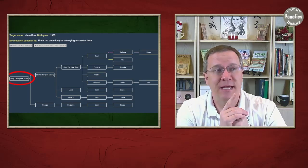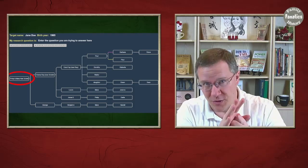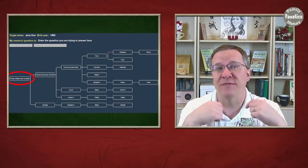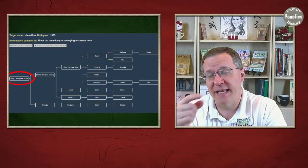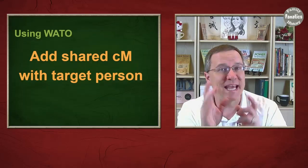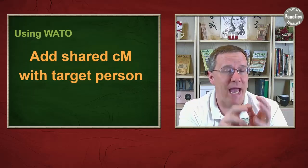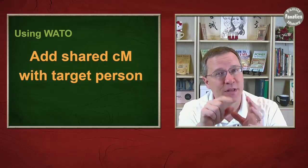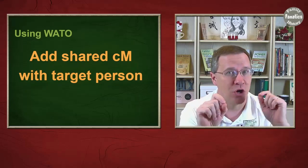You'll notice here that Jane Doe doesn't appear in this tree, and that's the way it's supposed to be because Jane Doe is who we're trying to find. We actually want to find out where in this tree Jane Doe fits. The next thing we want to do is we want to add in the shared DNA that each one of these people have with the target person.